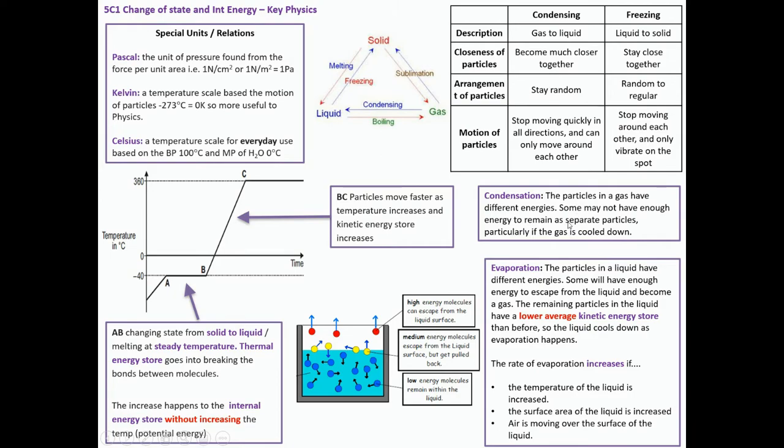We've got to be able to talk about condensation and evaporation. Condensation is when the particles don't have enough energy to remain as separate particles, so they coalesce, they condense, they come together. In evaporation, particles in a liquid will always have different energies. Some are fast, some are medium, some are quite slow. The really fast particles leave, and they leave what's left with a lower average kinetic energy store. It increases if the temperature of the liquid increases, if the surface of the liquid is increased, or if air moves over the surface of the liquid. That is change of state IGCSE physics.